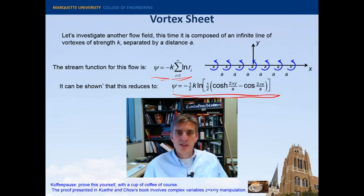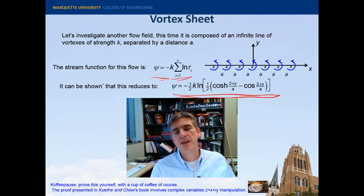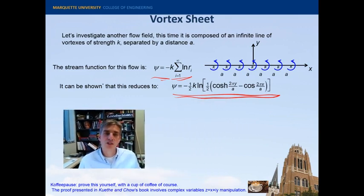All right. So this is a little friendlier in the sense that it doesn't contain this sum, this infinite sum, which is nice. And it's in x, y coordinates, and it's kind of sines and cosines and such. So that's a friendlier version of the original stream function.